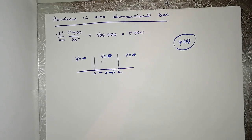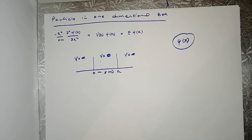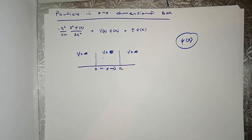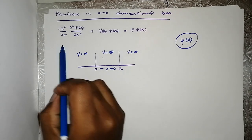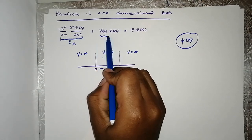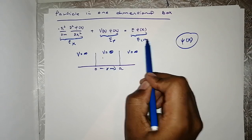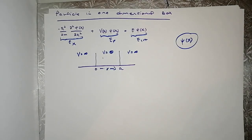The potential energy outside the box is infinity and the potential energy inside the box equals zero. As I've mentioned in the previous video, we are bound to come across the Schrödinger equation in almost all aspects involving quantum mechanics. In this equation, this is the kinetic energy, this is the potential energy, and this is the total energy.